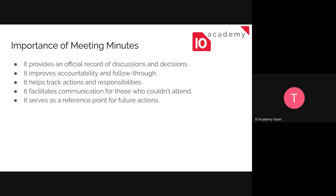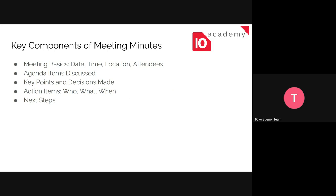It also serves as a reference point for future actions. So the key components of meeting minutes are: the basics — we should always include the date, the time, the location, and the attendees. We also include the agenda or the reason why that meeting was held, the items discussed, the key points and discussions made during the meeting, action items showing who got assigned to what task and when the deadline is, and the next steps or future plans.